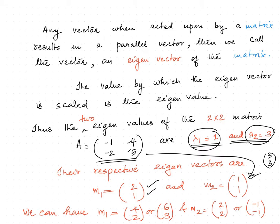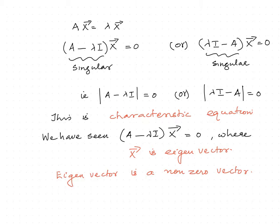We can have scaled vectors as eigenvectors. If [1, 1] is an eigenvector, then [2, 2] can also be an eigenvector. When the matrix acts on [2, 2], it results in a scaling by 3, meaning the resulting vector will be [6, 6]. Similarly, instead of [2, 1], we can have eigenvectors corresponding to an eigenvalue of 1 such as [4, 2] or [6, 3]. This shows that when a matrix acts on a vector, the resultant Ax will be a scaled version of the original x — that is why it is written as lambda*x.